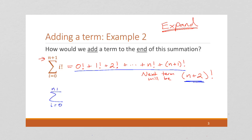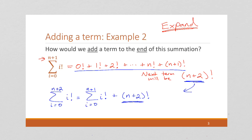So, i equals 0. Now we're going to go to n+2, because we're adding one more. This is going to be our old sum — from i=0 to n+1 of i! — plus this last value (n+2)! that we discovered. This is the term we would add, and this is how we would add it on to the end of the sum.